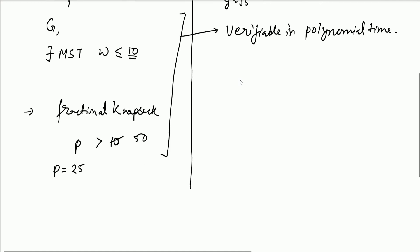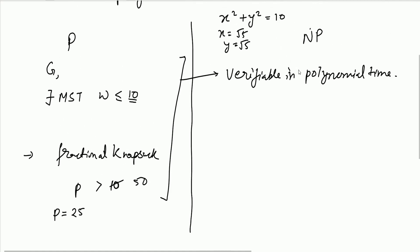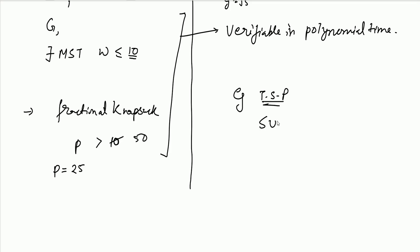There are some more problems in NP besides the P problems. All P problems lie in NP, and there are other problems — for example, the Travelling Salesman Problem, Subset Sum, and 0-1 Knapsack. These are not polynomial time solvable, but they are polynomial time verifiable. Right now we only have non-polynomial time solutions for them.